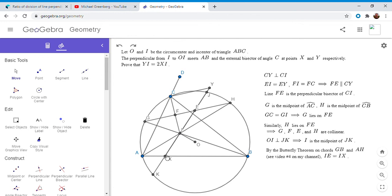And so now we're pretty much there. Because since E was defined to be the midpoint of IY, then YI has to be two IE, by definition of point E, but IE is equal to IX or XI. And so YI is equal to 2XI, and that solves the problem.